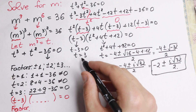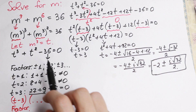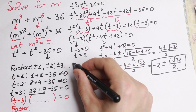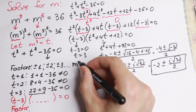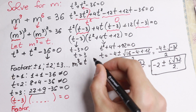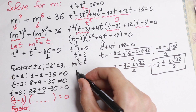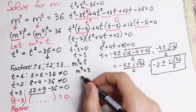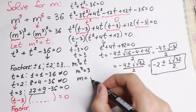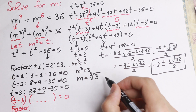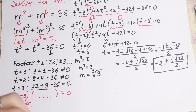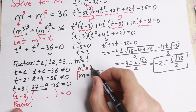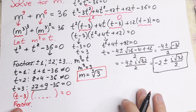We have t equal to 3 and since m cubed equals t, we get m cubed equals 3, and therefore m equals the cube root of 3. This is our one and only root in real numbers.